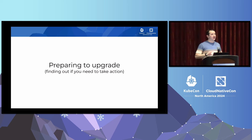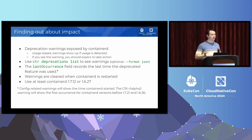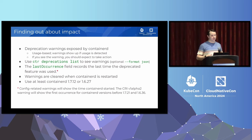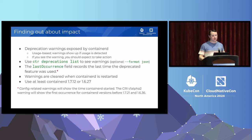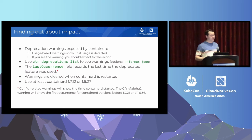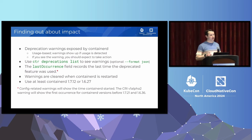So how do you know if you're going to be impacted? In ContainerD 1.6 and 1.7 we introduced a new deprecation service that finds out whether you're using any of the things that were removed in 2.0 and tells you about them. These are usage-based warnings — they will only show up if you're actually using the affected things, with no false positives. You can retrieve these through the CTR deprecations list command. We have that as a machine-readable JSON output as well if you want to integrate it into tooling without a full ContainerD API client.